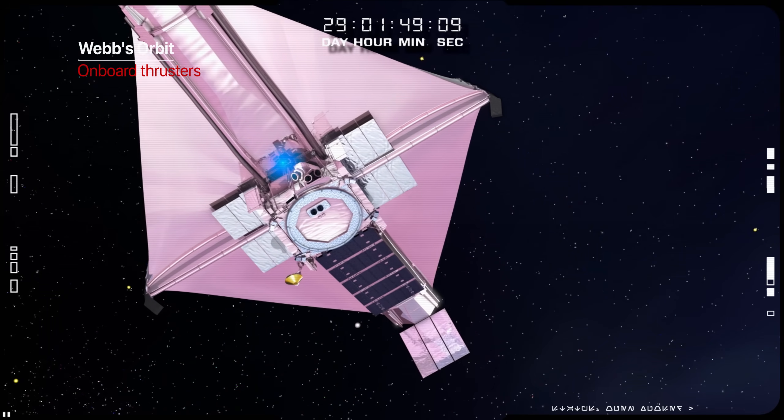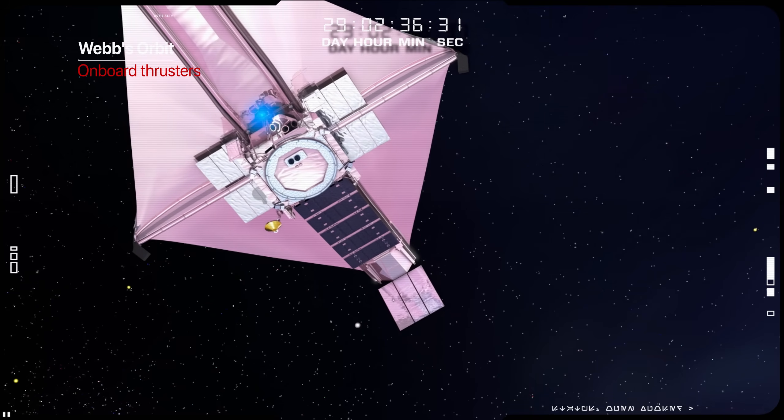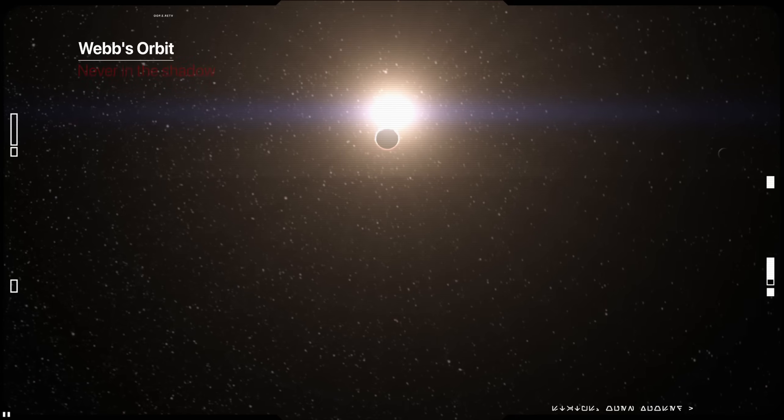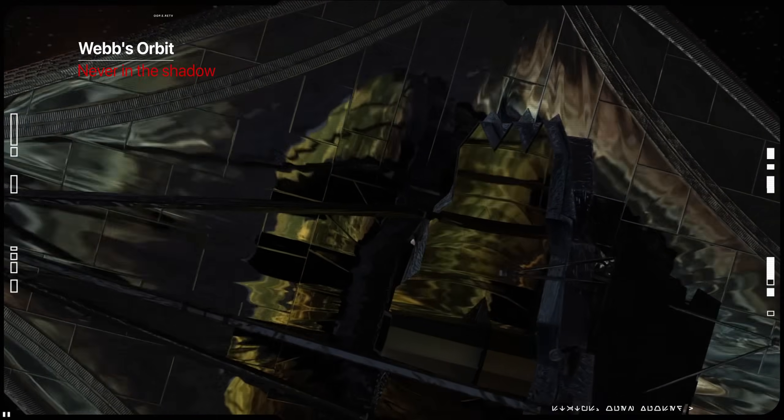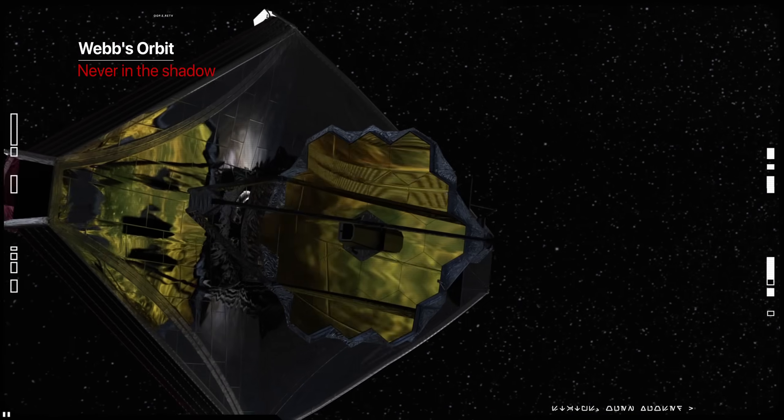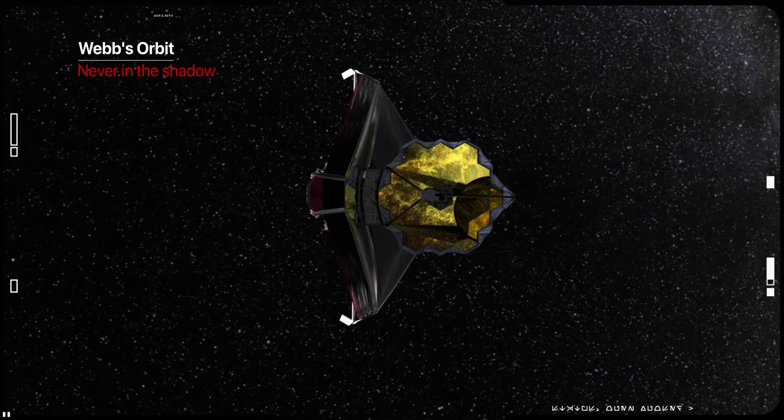This station-keeping maneuvers will be performed every 21 days. To maintain solar power, the orbit is designed such that the telescope is never in the shadow of the Earth or the Moon during the mission.